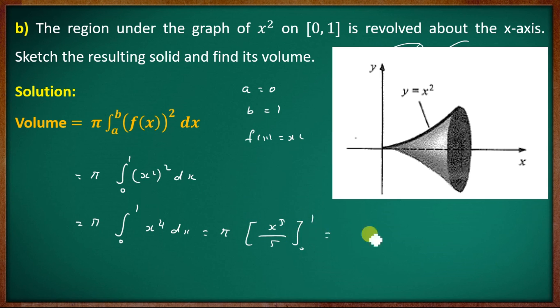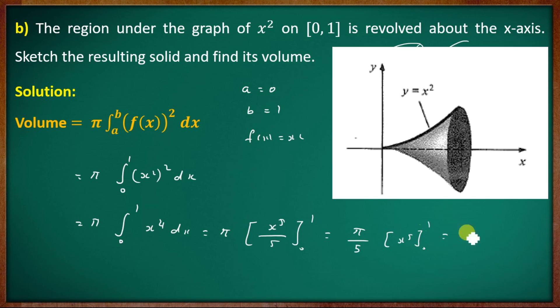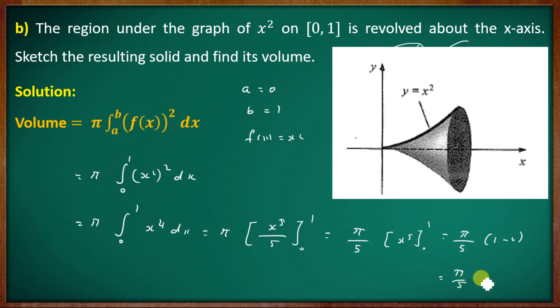Applying limits 0 to 1: π × (1⁵/5 − 0) = π/5. The required volume of the solid of revolution is π/5.